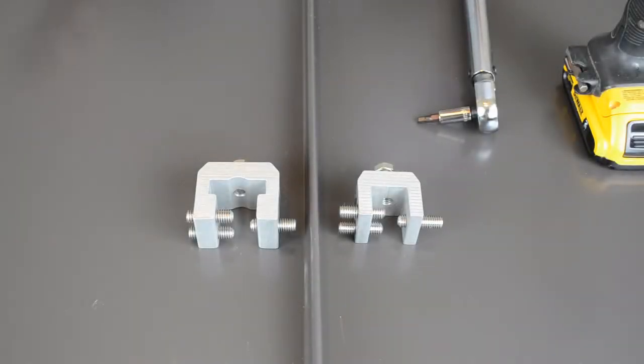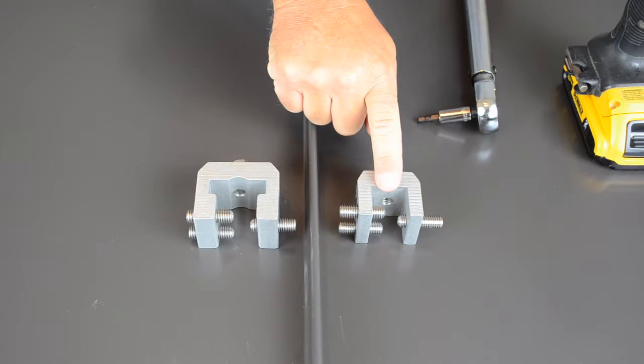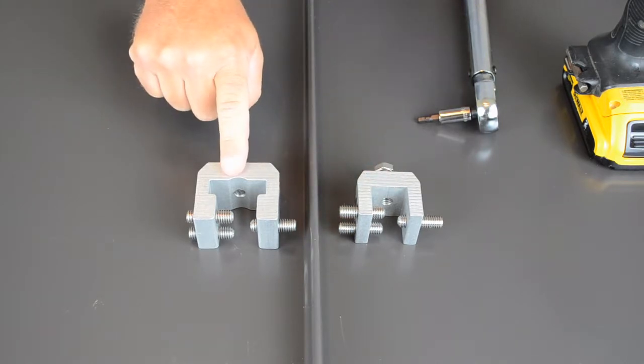In the roof clamp line, we have two sizes. This is the RC, the smaller of the two. This is the RCT, the larger of the two sizes.